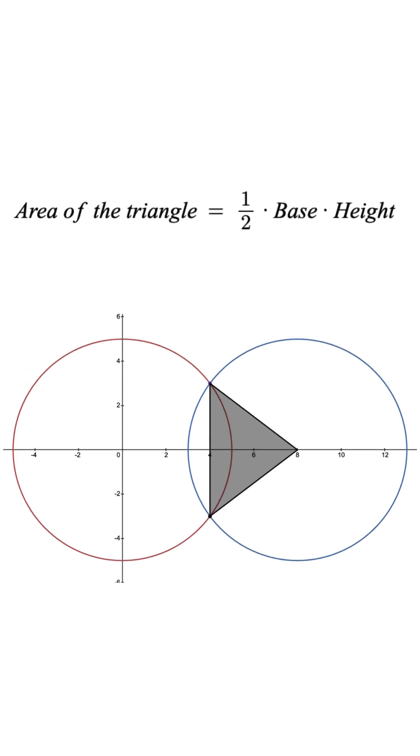Since the area of a triangle is half times base times height, the area of this triangle is going to be 12.